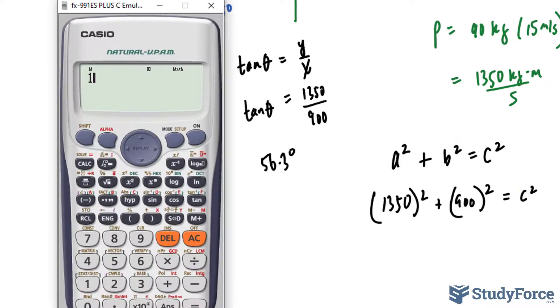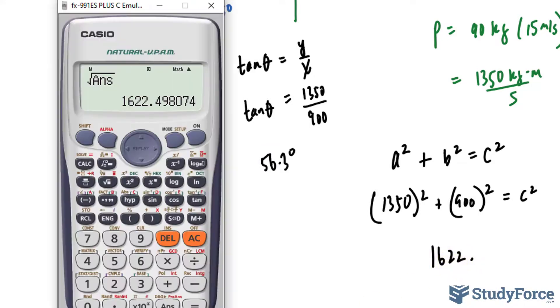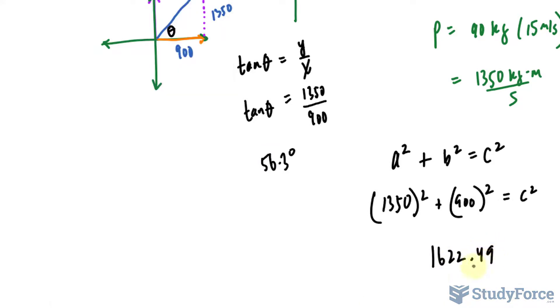I'll throw in 1350 into here and 900 into here and solve for c. Let me show you how to solve. So 1350 raised to the power of 2 plus 900 raised to the power of 2 and we square root. We get 1622.49 and that makes sense because the momentum should be more given that they both weigh more collectively being stuck together.